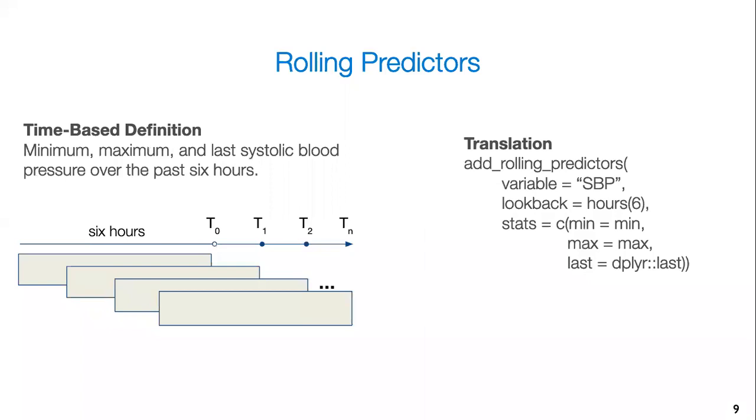Another type of function for predictors that we can invoke is called the rolling predictor. So what this looks at is you essentially have a fixed window that moves forward with every new prediction, considering T0 as that first prediction, T1, T2, and so on as subsequent predictions. So here we want to calculate the systolic blood pressure, the minimum, maximum, as well as the last value within each prediction. We look at the variable SBP, systolic blood pressure, and then we look at a look back of six hours, meaning we want to look six hours into the past, which moves forward with every new prediction.